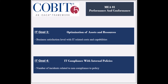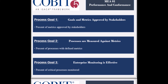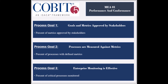The third IT goal is to optimize IT assets and resources, and its achievement is measured by the frequency of cost optimization assessments and by the business satisfaction level with IT costs and capabilities. The fourth IT goal is to ensure IT compliance with internal policies, and its achievement is measured by the number of incidents related to non-compliance to policy and by the frequency of policy review and update.